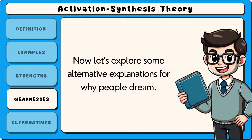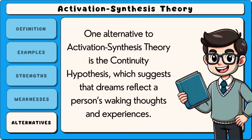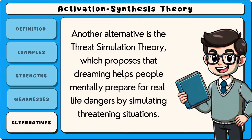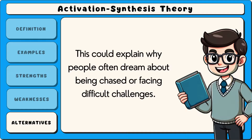Now let's explore some alternative explanations for why people dream. One alternative to activation synthesis theory is the continuity hypothesis, which suggests that dreams reflect a person's waking thoughts and experiences. According to this view, dreams are not random but are influenced by daily life and emotions. Another alternative is the threat simulation theory, which proposes that dreaming helps people mentally prepare for real-life dangers by simulating threatening situations. This could explain why people often dream about being chased or facing difficult challenges.